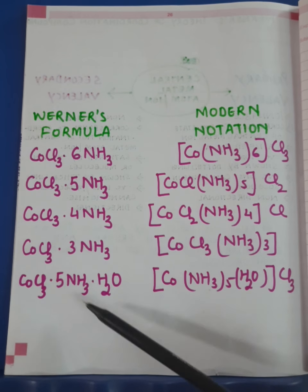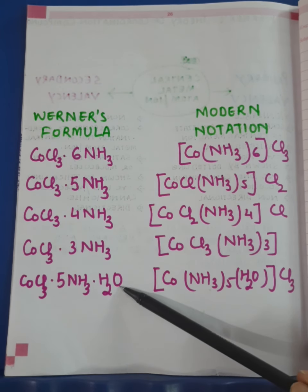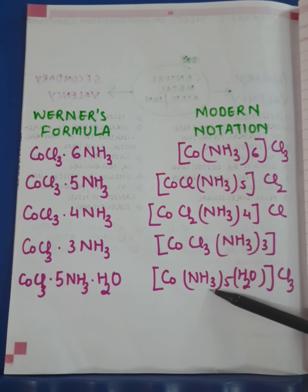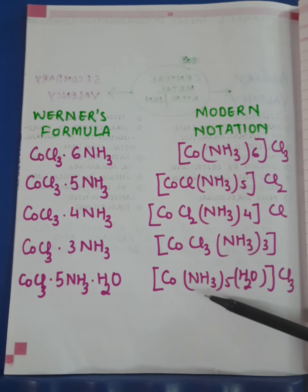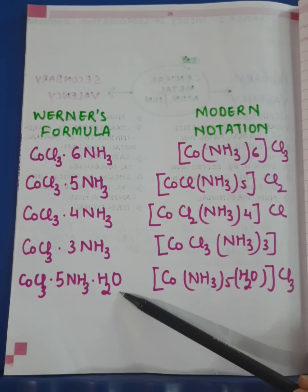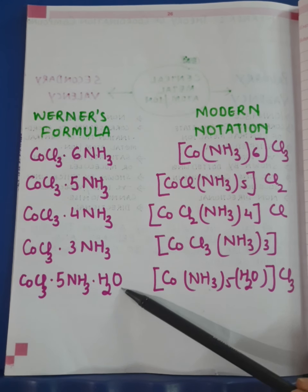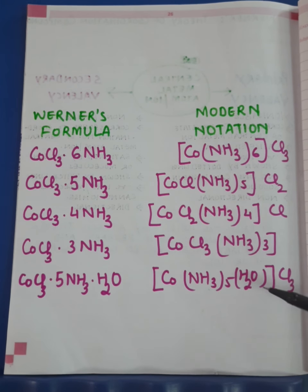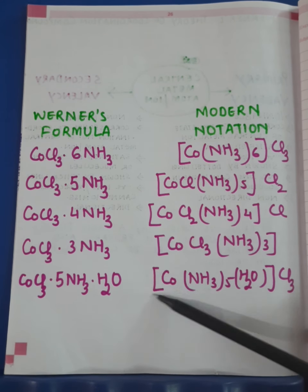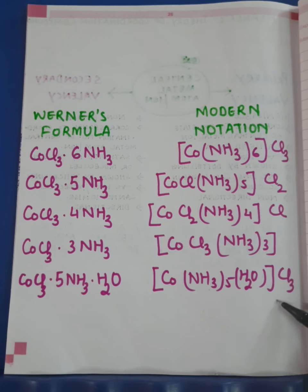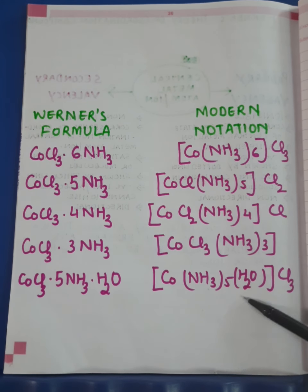The last example is the hydrated compound CoCl₃·5NH₃·H₂O. Cobalt's coordination number is six, so cobalt has five ammonia molecules as ligands via secondary valency. Since coordination number is six, one water molecule is preferred over chloride ions because chloride ions are negatively charged and water is a neutral molecule — so water is preferred as a ligand. Five ammonia and one water molecule are enclosed in the square bracket forming the coordination sphere, and the three remaining chloride ions comprise the ionization sphere.